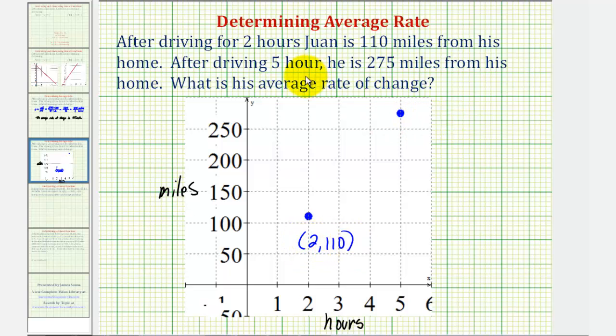And to represent that after five hours, he is 275 miles from his home, we'd have this point here with coordinates five, 275. So now if we sketch the line passing through these two points, we would have this blue line here.